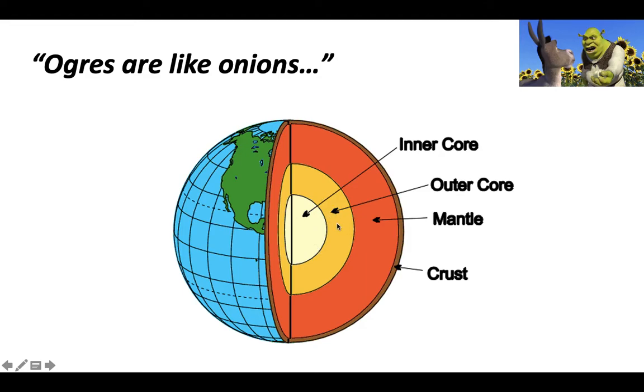It has an inner core, an outer core, a mantle, and a crust. We live on the crust. And you can see the crust is the thinnest part.